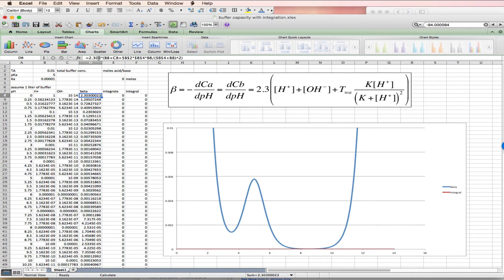And here's beta 2.303 times the H plus times the OH times the concentration of my weak base KAH plus over KA plus H plus squared.